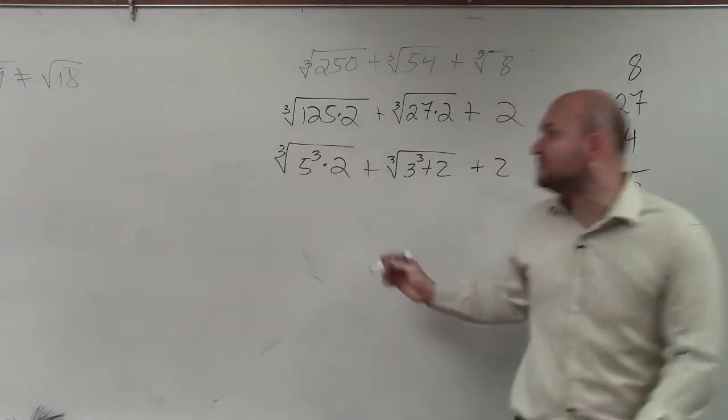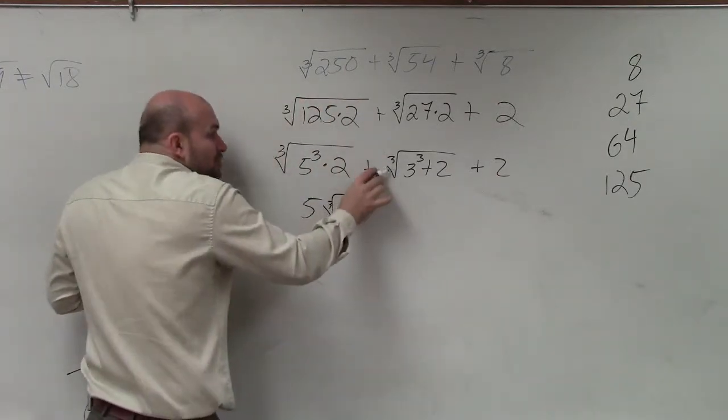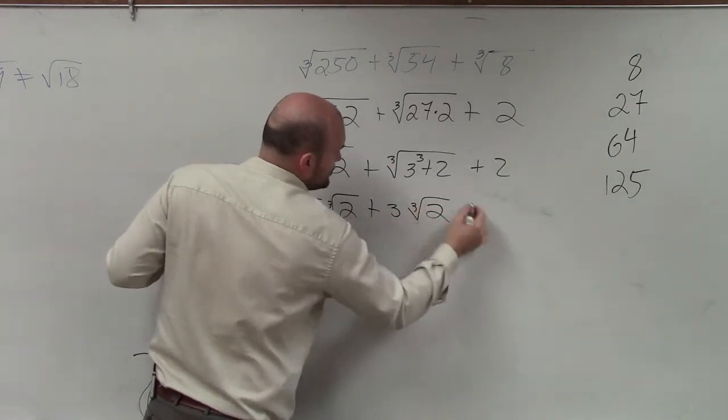So the cube root of 5 cubed is just 5 times the cube root of 2. The cube root of 3 cubed is just going to be 3 times the cube root of 2 plus 2.